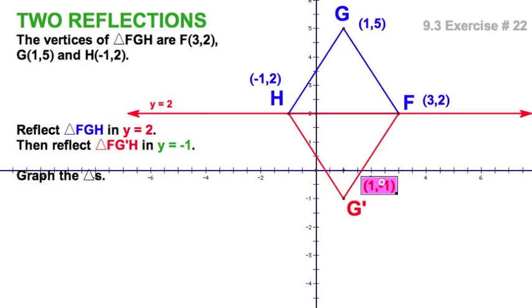Then we're going to reflect this triangle, I'll call it the red triangle, over this line. And this is the line Y equals negative 1. Again, it contains the point G. So G's not going anywhere.